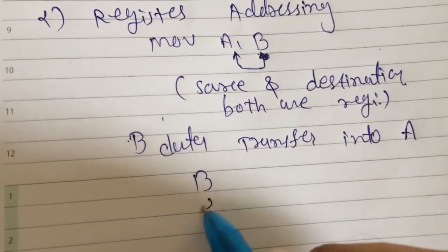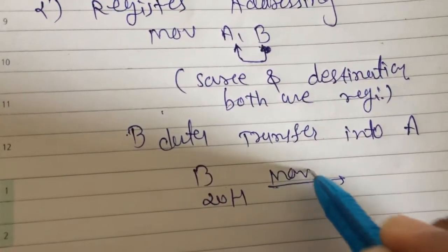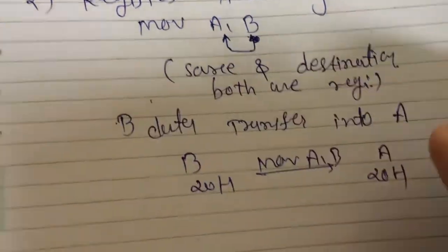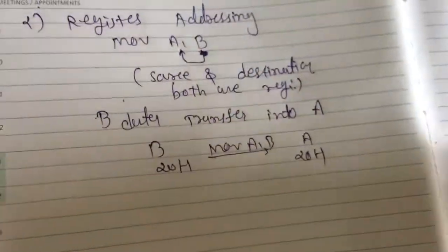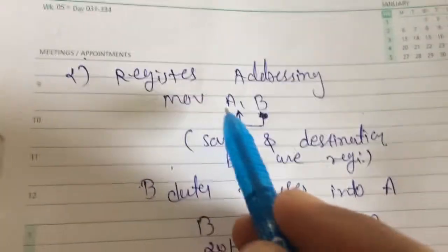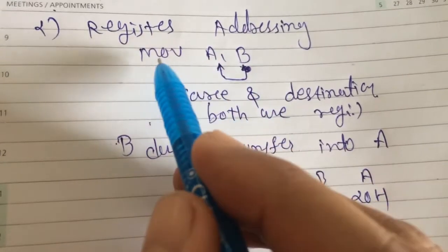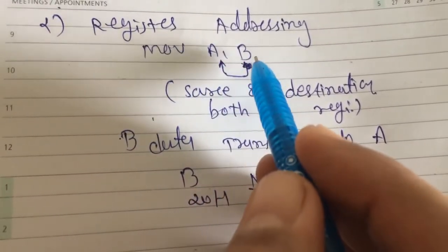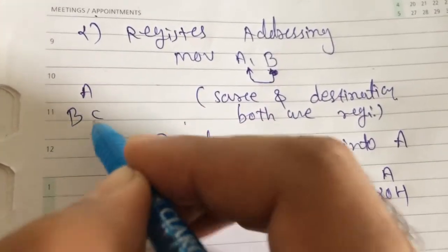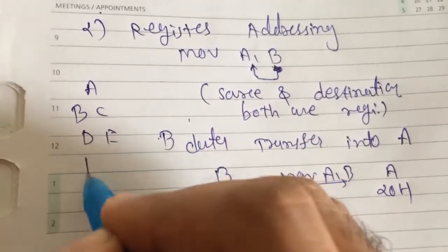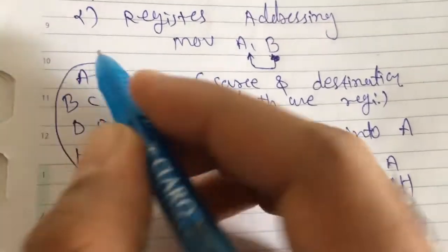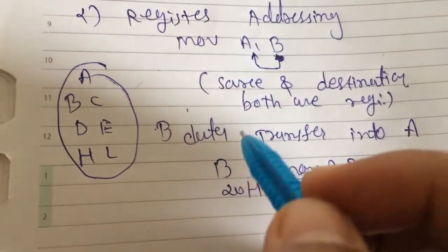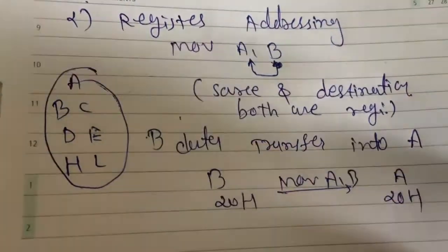If B contains 20H and we write MOV A, B, then A equals 20H. In the same way, you can give many examples: MOV A,C; MOV A,D; MOV A,E — using registers A, B, C, D, E, H, L. Between these, you can specify any register as a source and any register as a destination. This is register addressing mode.